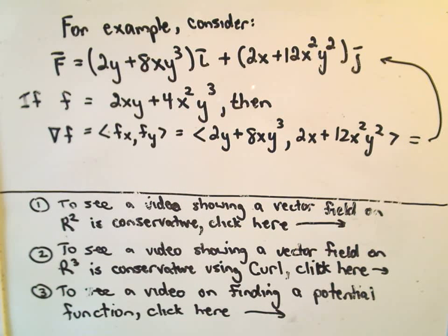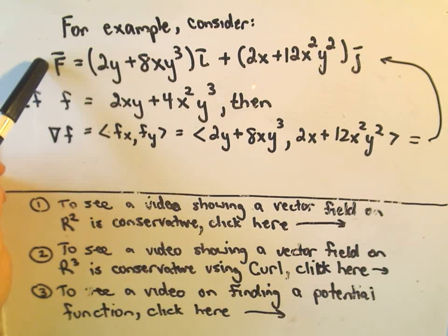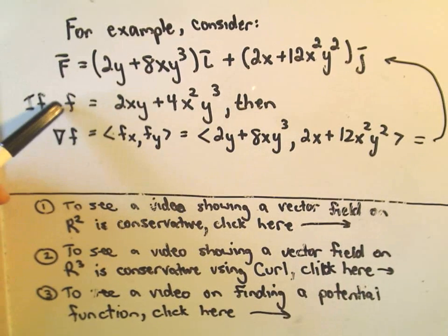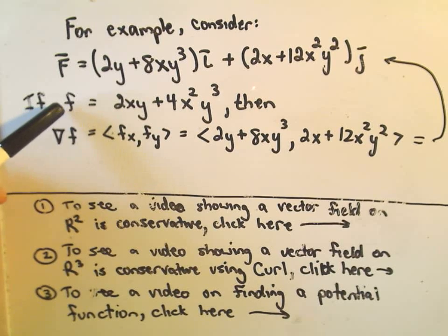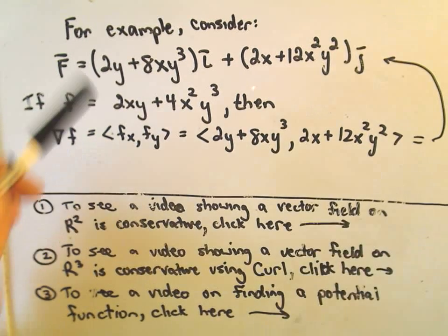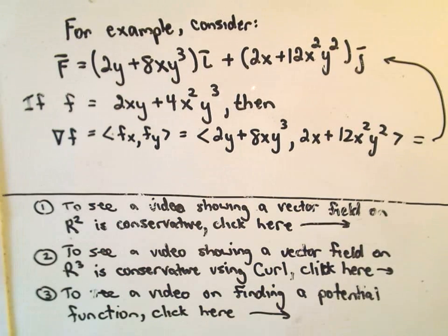Notice if we rewrite this, we could rewrite it as the original vector field just with different notation. So in fact, capital F is a conservative vector field because we were able to produce a function whose partial derivatives gave us the vector field back.